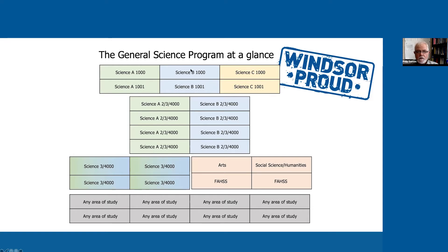Science B is the second area of study, and if you remember on the previous slide, we needed two courses from the third area — and that's Science C here.